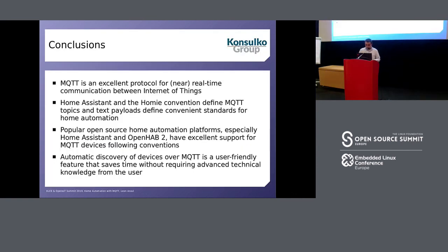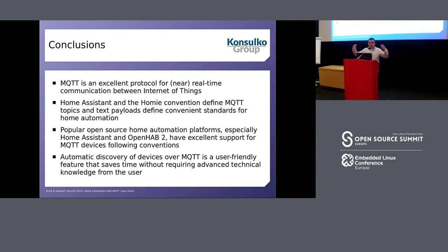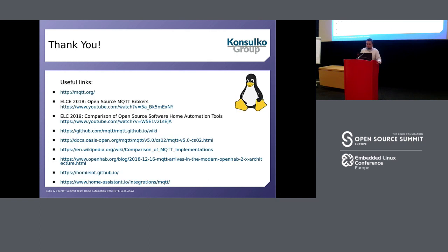A few conclusions: MQTT is a great protocol for near-real-time communication between machines. However, we need a convention to make sure we can integrate various devices from various vendors into various open source platforms. Home Assistant already has this convention, and so does Homie. Of course, these conventions are evolving over time. The automatic discovery of devices is a key feature for Internet of Things because it makes things easier for end users. Thank you very much. These are a few useful links — all the slides are already available. We're a little ahead of schedule, but this is the last talk in this room, so if you have any questions, I'd love to hear them.